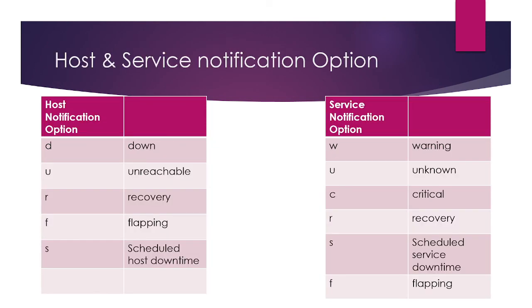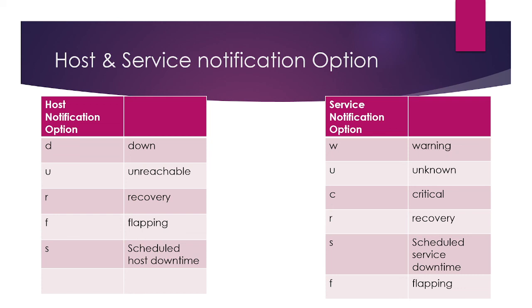For host and service notifications, the options are: D for Down, U for Unreachable, R for Recovery, F for Flapping, and S for Scheduled Host Downtime. For services, we have similar options: W for Warning, U for Unknown, C for Critical, R for Recovery, S for Scheduled Downtime, and F for Flapping.